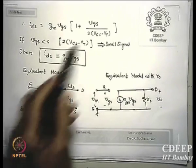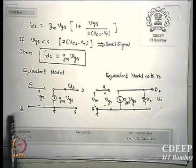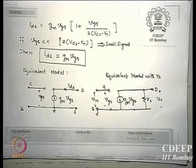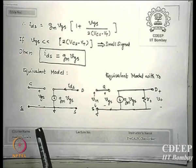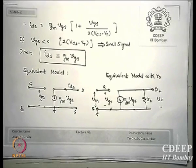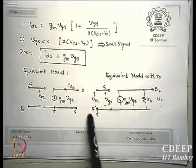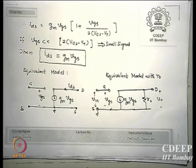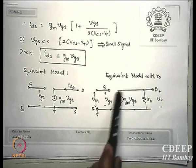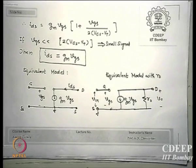The small-signal equivalent circuit of a MOSFET has: gate, drain, and common source terminals. Gate-to-source resistance is essentially open circuit (insulator, hundreds of megaohms). The output is a current source GM*VGS. Including R0, the equivalent circuit has VGS as the controlling voltage, GM*VGS as the dependent current source shunted by R0, where R0 is on the order of 1 to tens of megaohms — making it a relatively good current source.